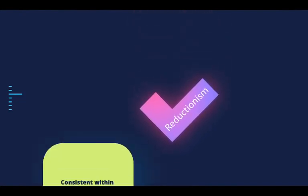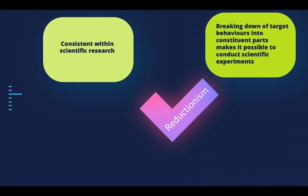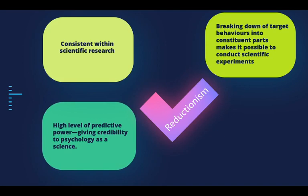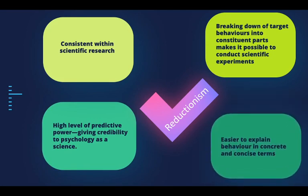Looking at the positives of reductionism: it is consistent with scientific research. It breaks down target behaviors into constituent parts, making it possible to conduct scientific experiments. It has a high level of predictive power and gives credibility to psychology as a science — if you're able to create a theory, predict it, and then prove it, that's far more scientific. It is easier to explain in concrete and concise terms; pointing to a stimulus-response link is far easier to understand than holism, which can be quite broad and vague.